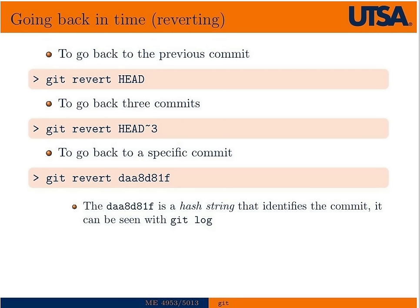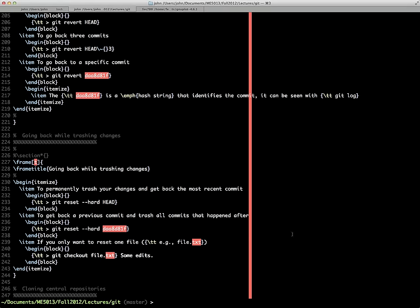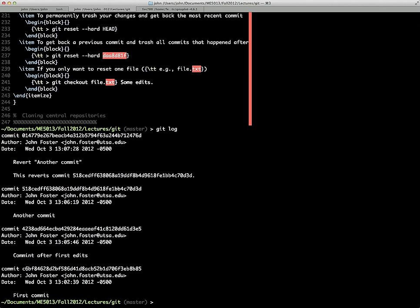We could also revert to commits farther back in time using the syntax 'HEAD~3' to go three commits back, or go back to a specific commit. When we type 'git log', we see that long hash string — we can refer exactly to the commit we want by typing in the hash. The hash string is around 28 characters long, but you only need enough characters to make it unique, which is usually just seven or eight, even with thousands of commits.